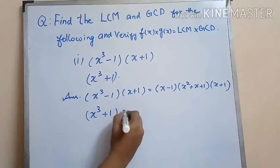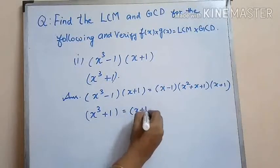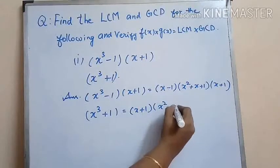In g(x) we have x cubed plus 1, which can be expanded as x plus 1 times x squared minus x plus 1.